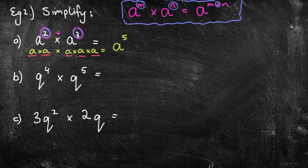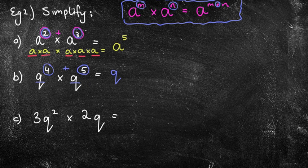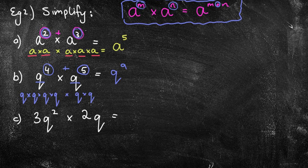Let's have a look at the next one. We've got Q to the power of 4 times Q to the power of 5. If I use this rule, are the letters the same? Well, yes they are. So what can we do with the powers if we're multiplying? I've got 4 of them here and 5 of them here, which means I've got 9 of them all together, which is Q to the power of 9. That makes sense because 4 of them will be Q times Q times Q times Q, and then I've got 5 more of them, making 9 all together.